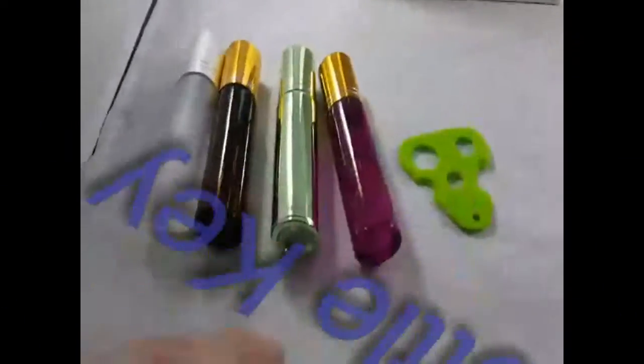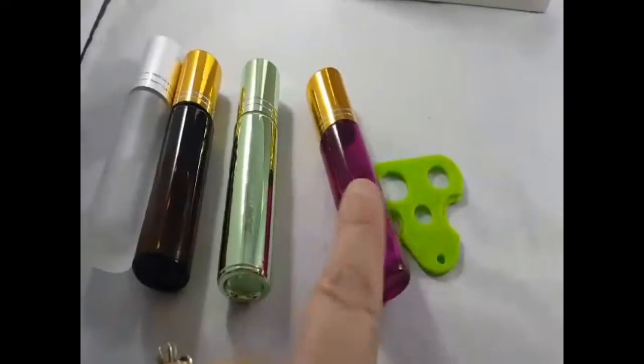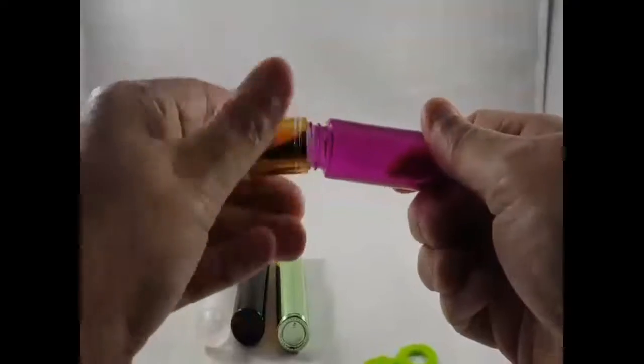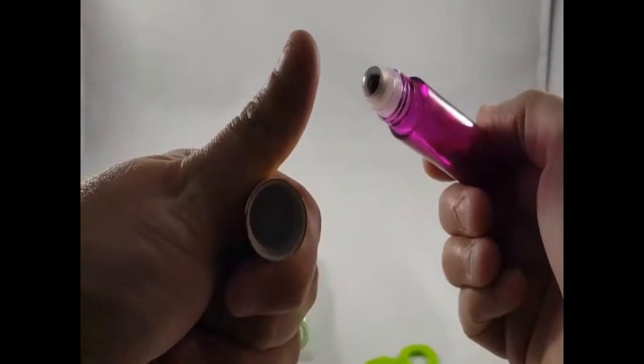These come with a cool little essential oil bottle key that helps you take out your orifices and also helps you put the roller ball back into place after filling your jars or your bottles.